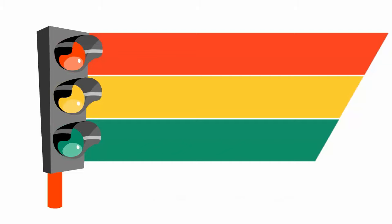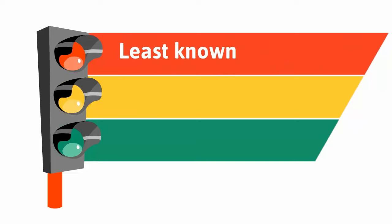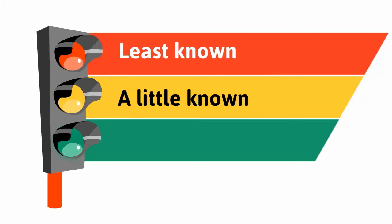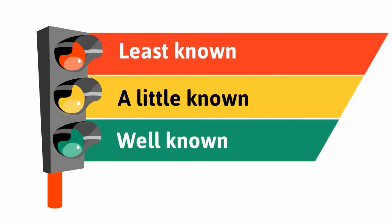With this technique, you color code what you know the least as red, what you sort of know as yellow, and what you really know as green.